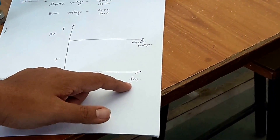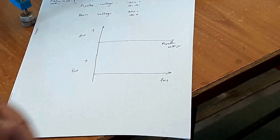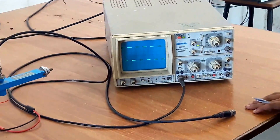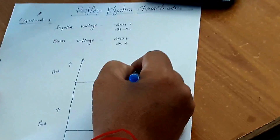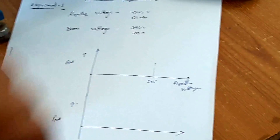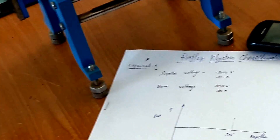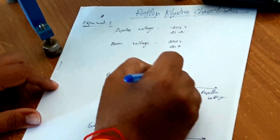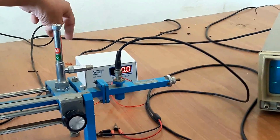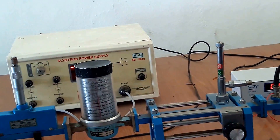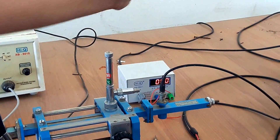We will make a graph between the repeller voltage and the output power. Similarly, we will make the output power with respect to frequency. We are getting the maximum amplitude at around repeller voltage of 205. We have to see the corresponding output power. Remove the CRO connection and connect the DC ammeter — the current will be very less, so we have to select microamps range.